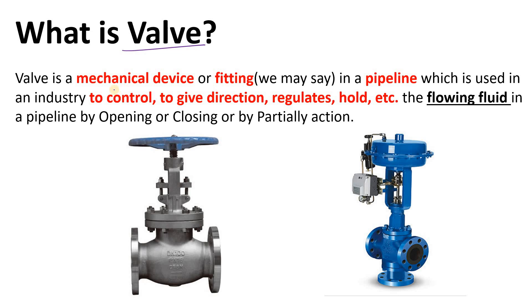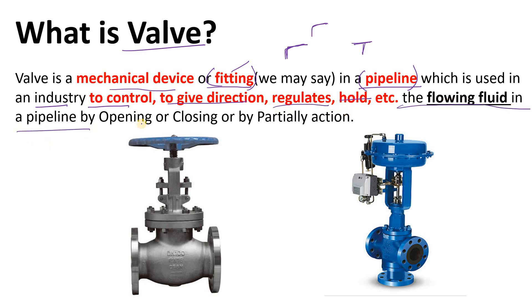A valve is a mechanical device — we may also say it is a fitting, like an elbow or a T which we use in our piping system. So a valve is a mechanical device or fitting in a pipeline, used in industry to control, give direction to, regulate, or hold the flowing fluid in a pipeline by opening, closing, or by partially opening or partially closing.